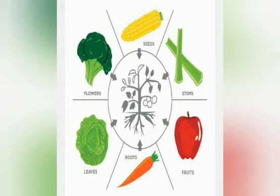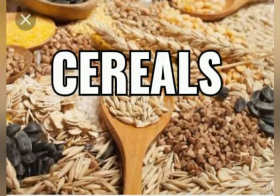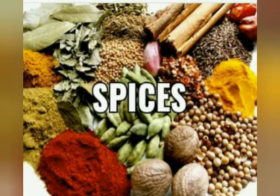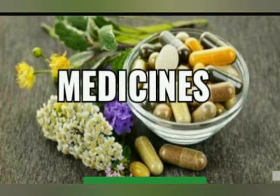We get most of the things from plants. Plants give us different kinds of food like vegetables, fruits, cereals, pulses, spices, oil, medicines and many other things.